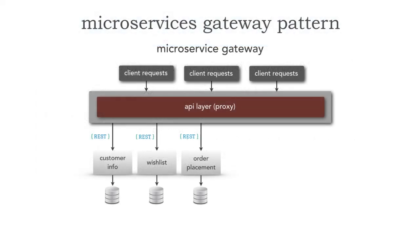Let me show you the problem statement here. We've got a typical application — a web app that has a customer information microservice, a wishlist microservice, and an order placement microservice. Let's say this is a typical order entry kind of application, all communicating through REST.